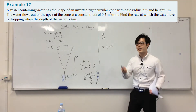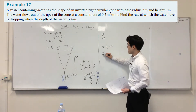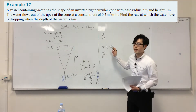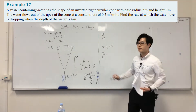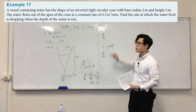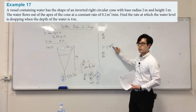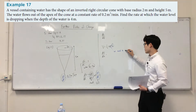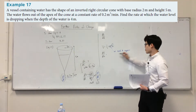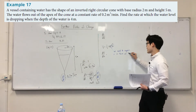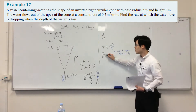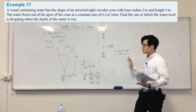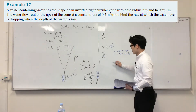Here's the problem though — I can't simply differentiate right now. Can you see why? We have two variables, r and h. Because we have two variables, we need to express the radius r in terms of h, so that everything is in terms of h before we differentiate with respect to h. That's the hard part.